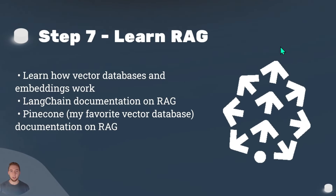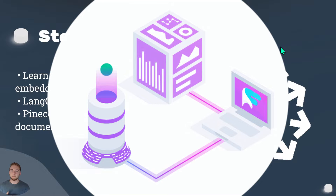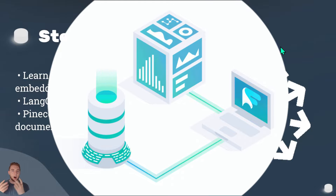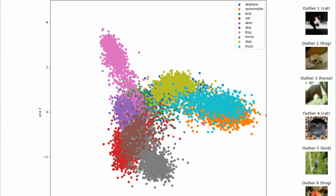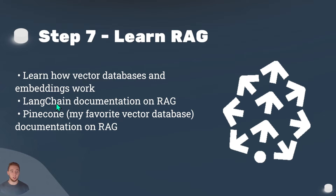Step seven is RAG — retrieval augmented generation. It means using external knowledge with a large language model. If the AI is isolated from the outside world and doesn't have the context it needs around your application, it's not going to perform well. So it's important to learn how vector databases and embeddings work, because that is the backbone of RAG. LangChain helps a lot with RAG, and Pinecone — my favorite vector database — also has great documentation on it.